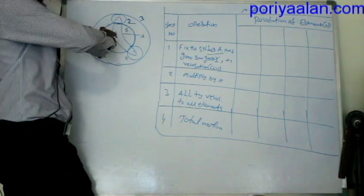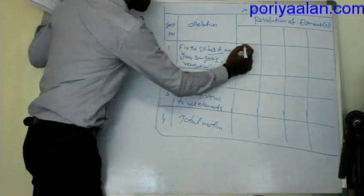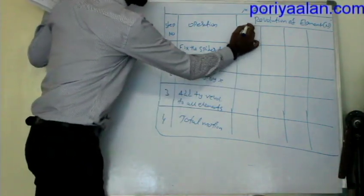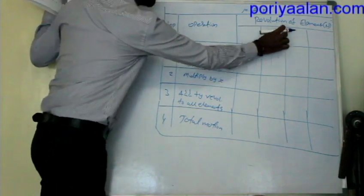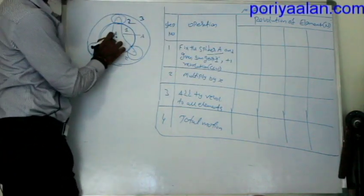Then I will add a spider row. The spider speed is zero when the spider is fixed. Then add sun gear plus 1 revolution, and calculate the planet gear speed as T1 divided by T2, and the annular gear speed as minus T1 divided by T3.